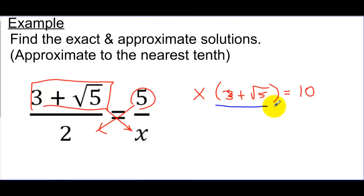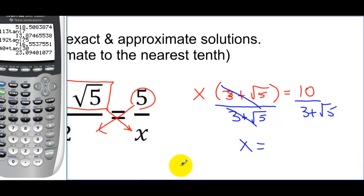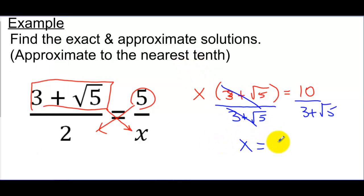We're going to divide away this number — (3 plus the square root of 5) — and do the same thing on the other side. The problem says approximate to the nearest tenth, so I don't need to do any rationalizing of denominators. We get a cancel, and I know what x equals. Going to my calculator: 10 divided by (3 plus the square root of 5), which is going to be about 1.9 rounded to the nearest tenth. So that's my answer.